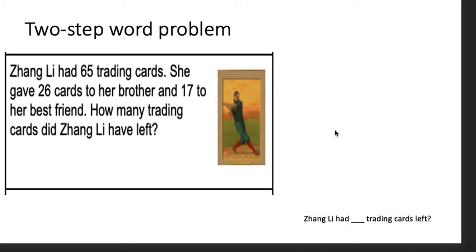The third time, I'm going to let you read it by yourself. Read it one more time. Hopefully, you took the time to do that. I'll read it one more time: Zhang Lee had 65 trading cards. She gave 26 to her brother and 17 to her best friend. How many trading cards does Zhang Lee have left?